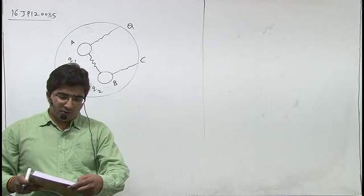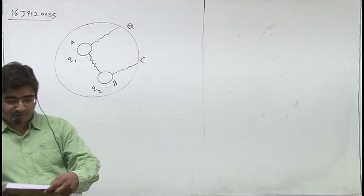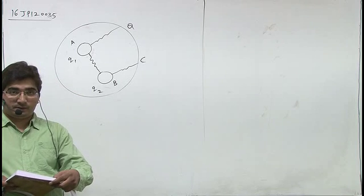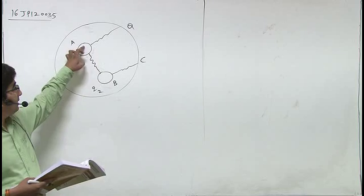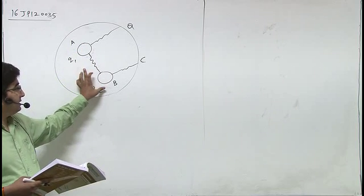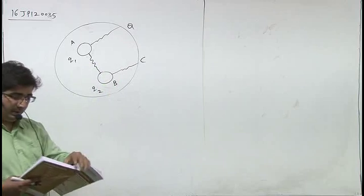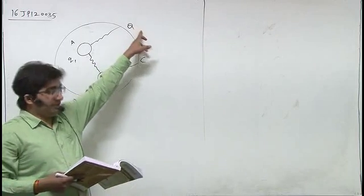The question is: two small conductors A and B are given charges Q1 and Q2 respectively. They are placed inside a hollow metallic conductor which is carrying a charge Q.